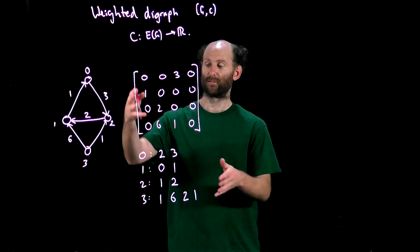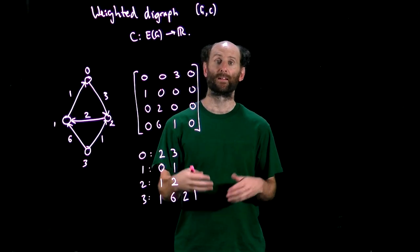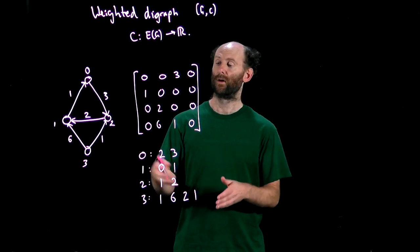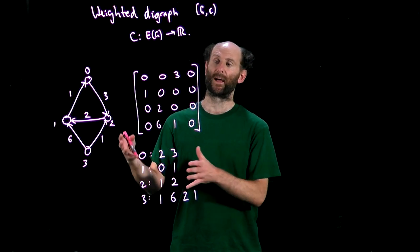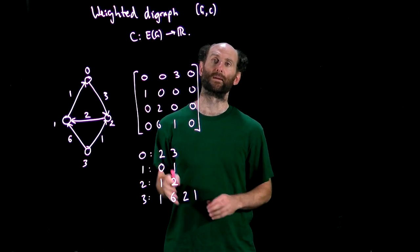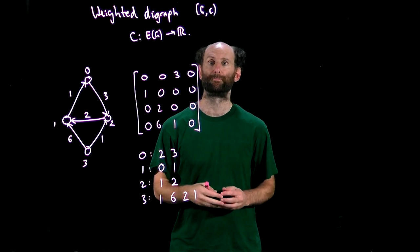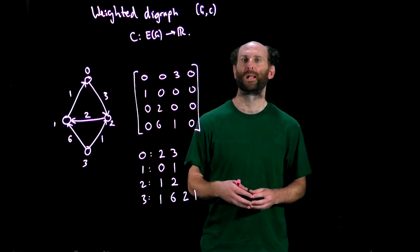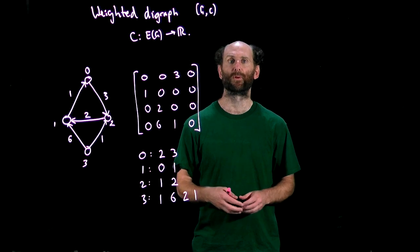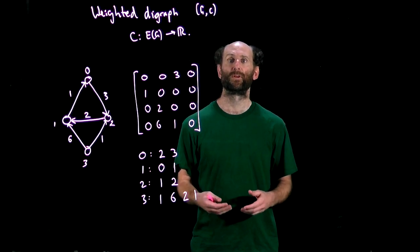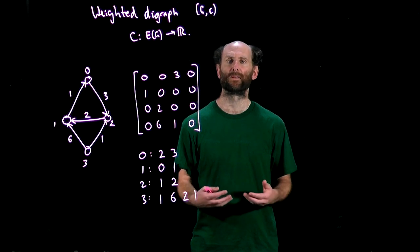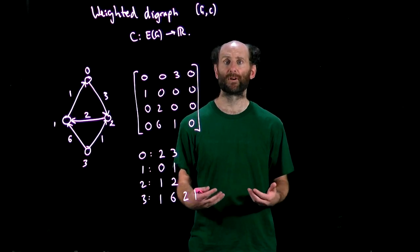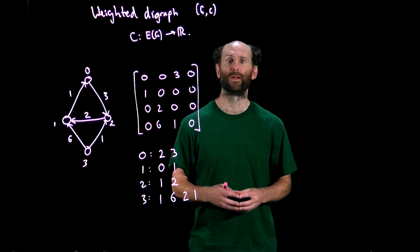So these two representations are equivalent. Again we can spend time looking at how long it takes to do standard operations on either of these representations and you'll find the results are the same as in unweighted digraphs that we saw before. Many problems can be formulated as optimization problems on weighted graphs. We'll look at a few of the classic algorithms associated with such problems in the next few lectures but first let's remind ourselves of a few definitions.